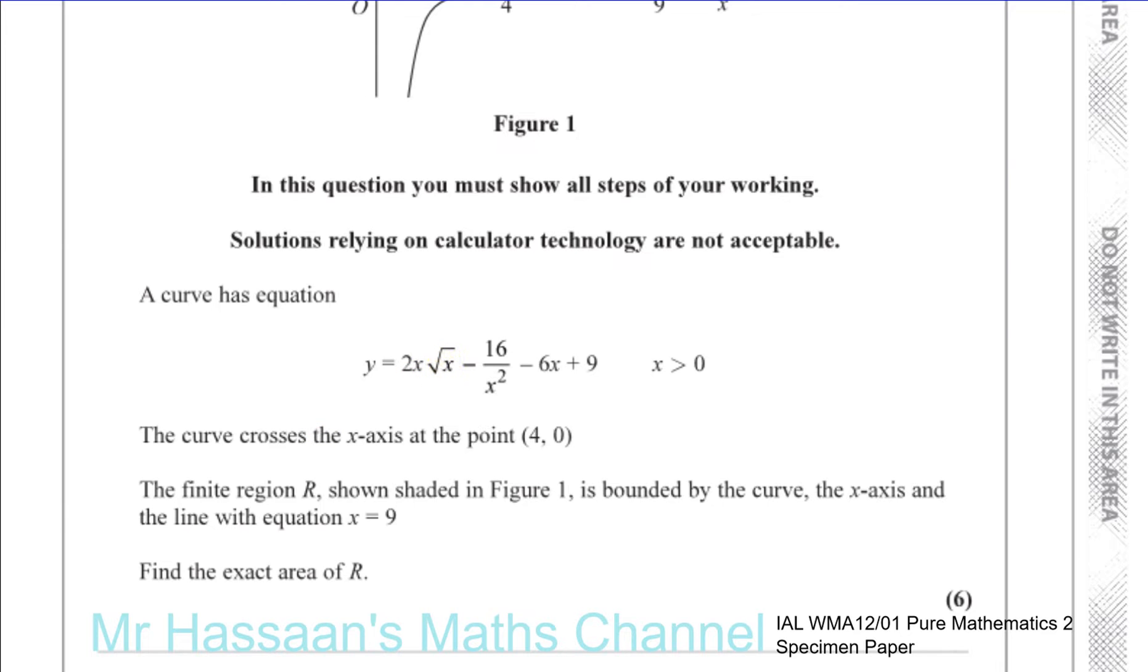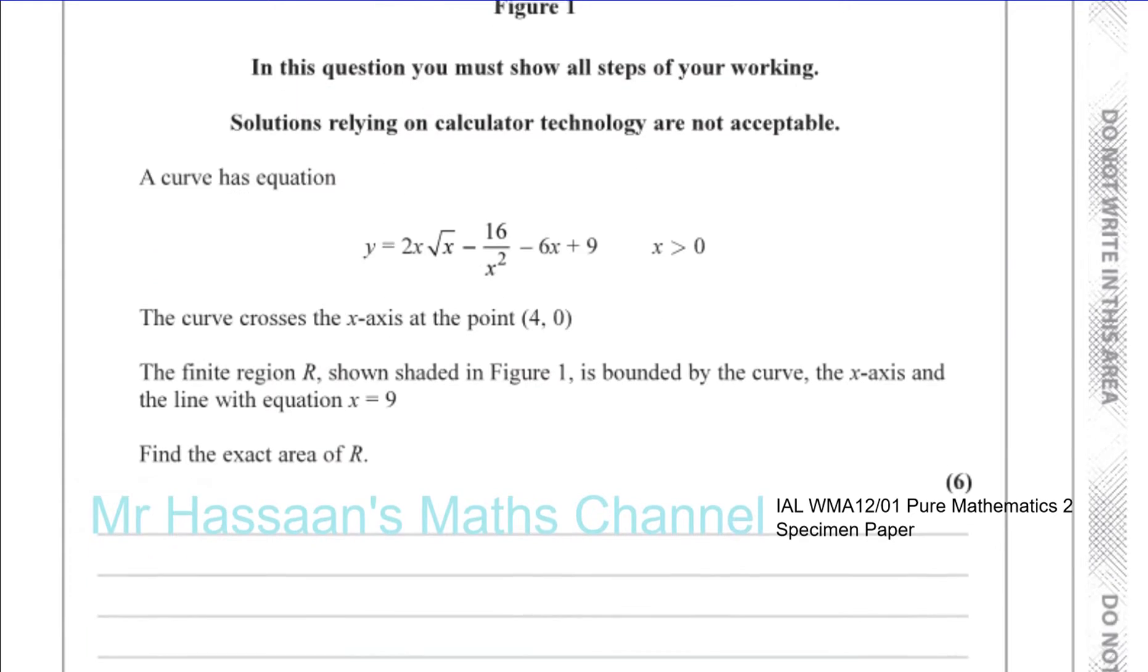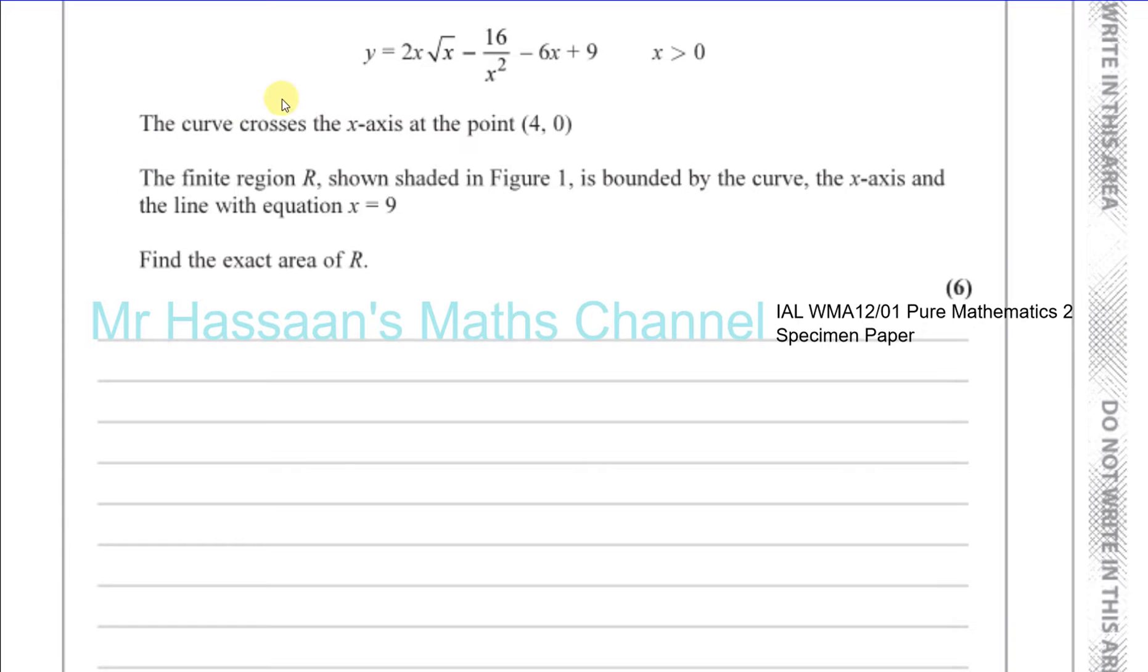So we have to basically get this changed from the state it's written in now into a state that's easy for us to integrate. So I'm going to write this as 2x times x to the power of a half. I can combine these together minus 16x to the power of minus 2 minus 6x that's fine plus 9 that's fine. So just have to combine these together.